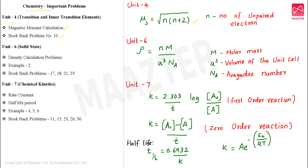Next, we will talk about Unit 6, Solid State. In this unit, we will talk about density calculation related problems — specifically related to the edge length and the number of atoms present in the unit cell. That is example number 2, book back problems 17, 18, 21, and 23. These are important problems related to the density calculation. The density calculation formula is: density equal to n × m divided by a³ × Nₐ, where n is the number of atoms per unit cell.